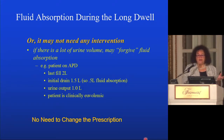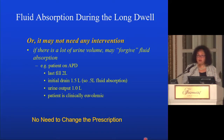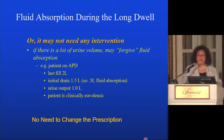For example, a patient comes off the cycler with two liters in, keeps it all day, and when going on the cycler at night their initial drain is 1.5 liters — they've absorbed 0.5 liters. If they're clinically euvolemic and still urinating, you might just leave it. You may realize that in the future, when they lose residual urine output, absorbing 500 mL every day could become a problem — but for now it isn't.